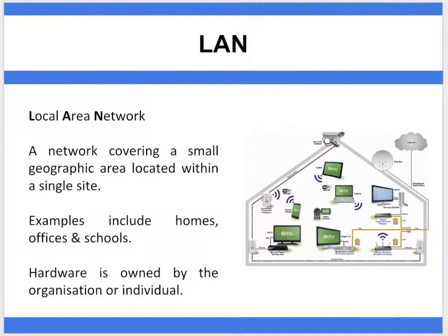A classic example would be your home, where you've probably got an internet router from one of the many ISPs like Sky, Virgin, BT, Talk Talk — a whole range of different companies. Your family will connect either wirelessly or wired to the network, depending on where the internet router is situated.